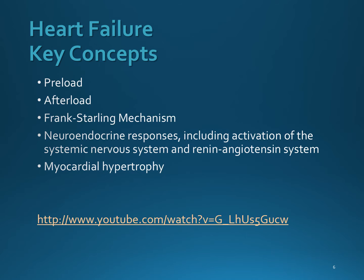The compensatory mechanisms that are activated improve the cardiac output for the moment, but in the end they result in negative consequences for the heart muscle. Frank Starling's mechanism will increase contractility, which will increase the cardiac output, but it results in an increased cardiac workload. Ventricular hypertrophy also increases contractility to increase cardiac output, but it also increases myocardial oxygen demands and results in cellular enlargement. The neuroendocrine response of the sympathetic nervous system leads to an increase in the heart rate, blood pressure, contractility, venous resistance, and vascular return, but all of this increases the myocardial work and oxygen demand of the heart.